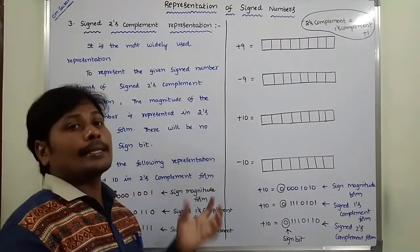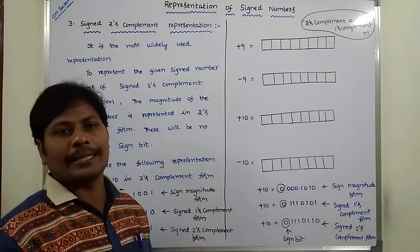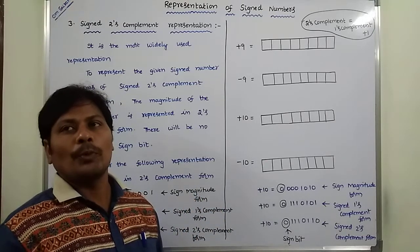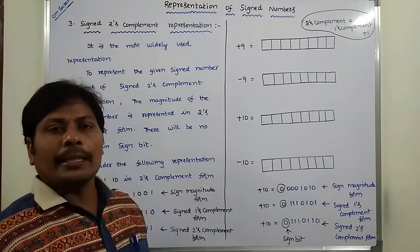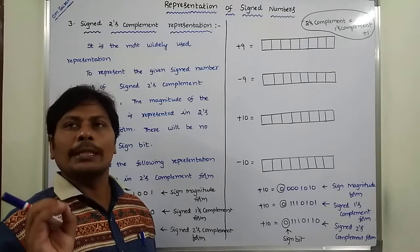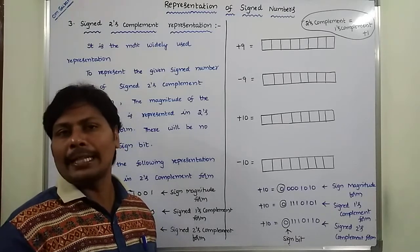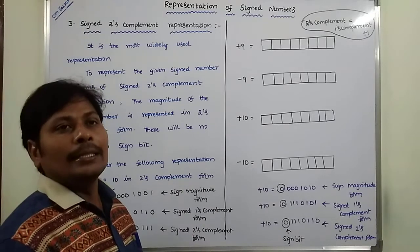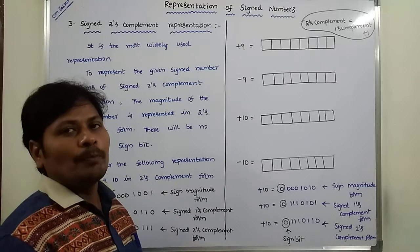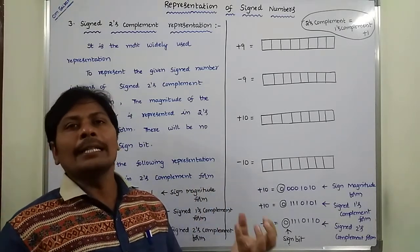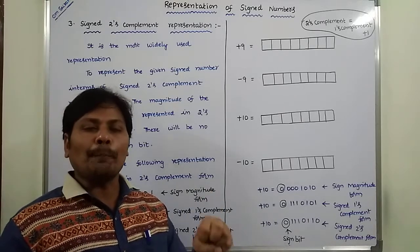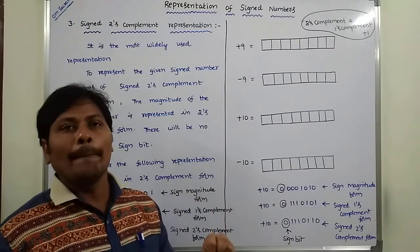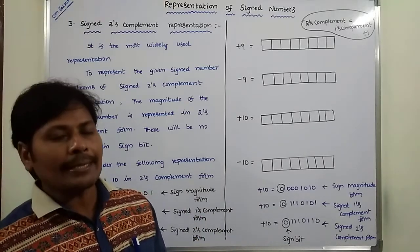The third representation is signed two's complement representation. It is the most widely used signed representation. Signed two's complement representation is the most widely used for representing signed numbers. To represent a given signed number in signed two's complement representation, the magnitude of the given signed number can be represented in two's complement form. Two's complement form can be obtained by one's complement form plus one.